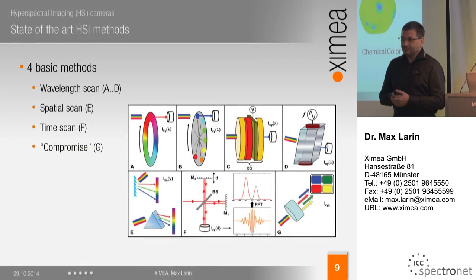Today's state of the art in hyperspectral imaging uses several techniques, divided into four basic methods. The first is wavelength scanning, where a filter in front of the camera selects one particular wavelength. Then there is spatial scanning, where a prism — effectively a slit prism — creates a spectral image on a 2D sensor. There is also time scanning, which uses Fourier transform and is more complex, and finally various combination methods.